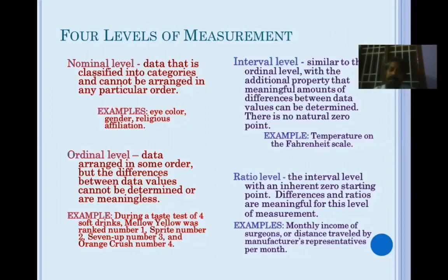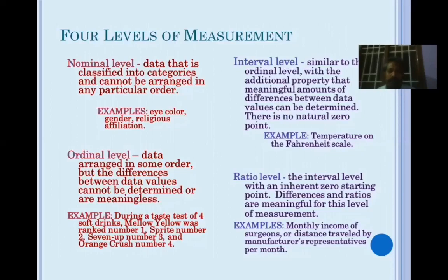Then comes ordinal data, where there is a kind of ordering between items. For example, if you give respondents several cool drinks and ask them to rank them — first rank, second rank, third rank, fourth rank — that kind of ranked data is called ordinal data. Then comes interval and ratio, both commonly called scale data — both are numeric data.